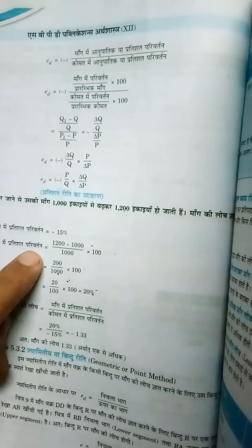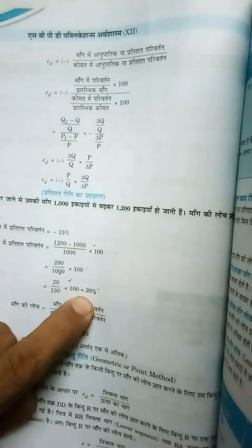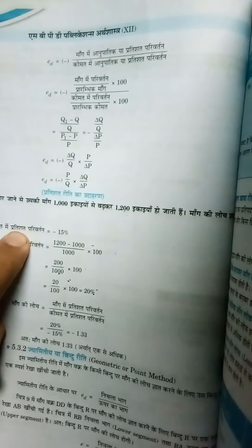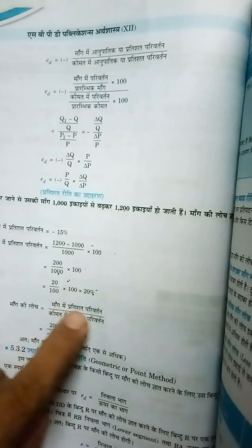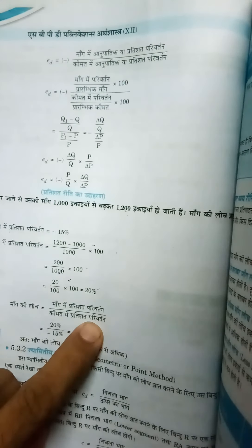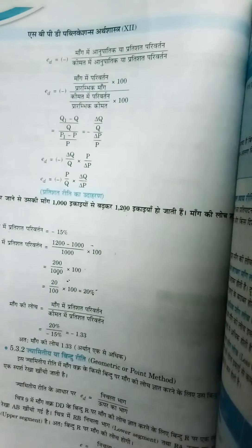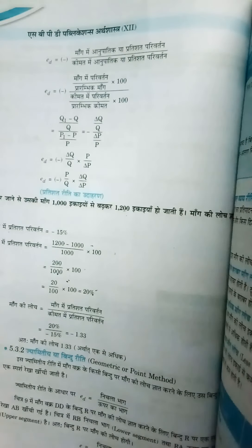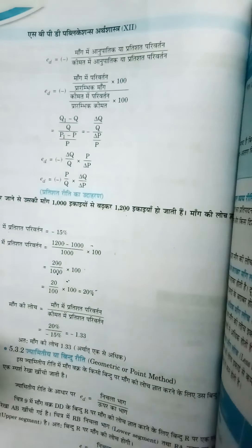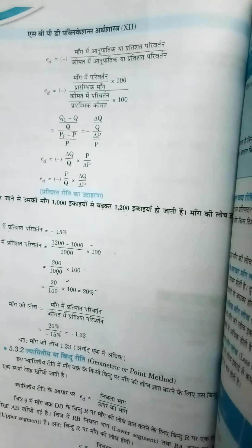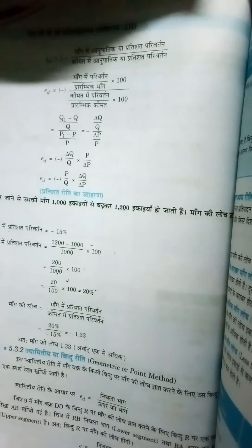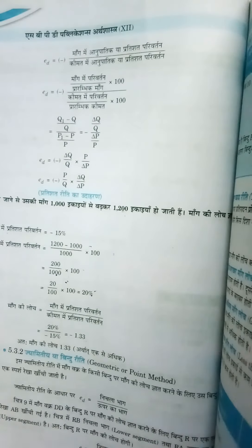ED equals percentage change in demand divided by percentage change in price. Dividing these: 20 by minus 15 gives minus 1.33. Since it's greater than 1, this is elastic. We don't write the negative sign in the final answer.